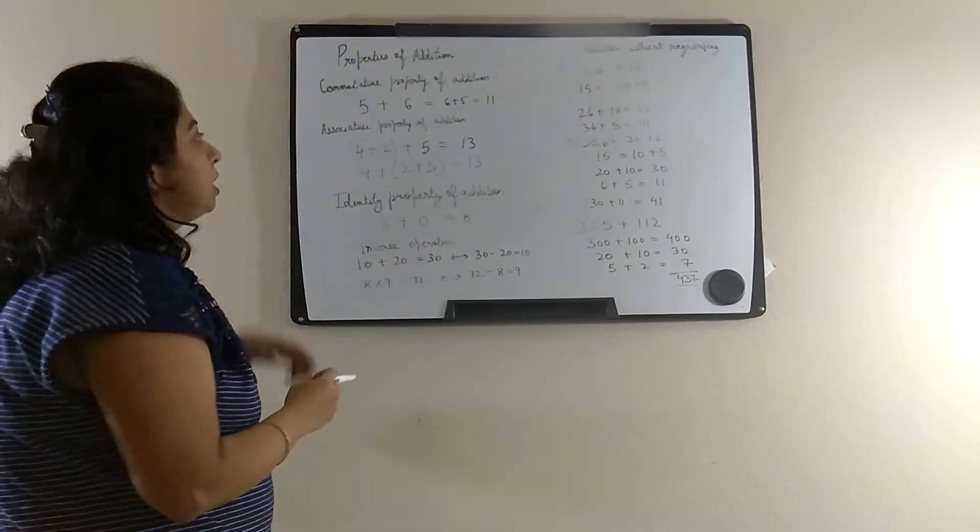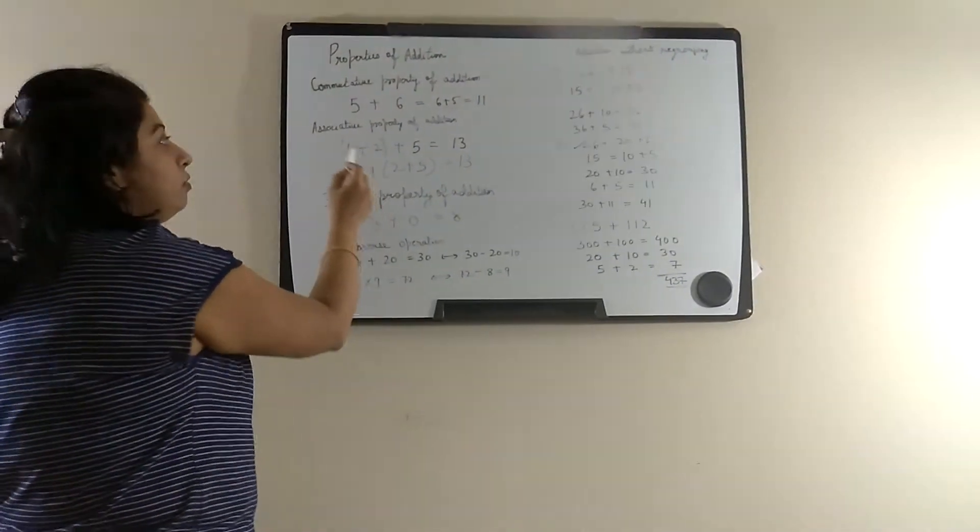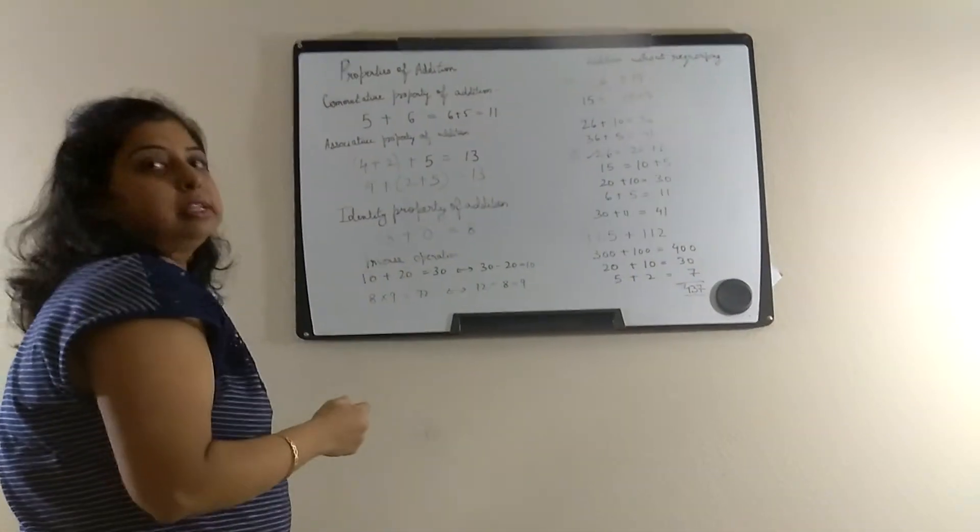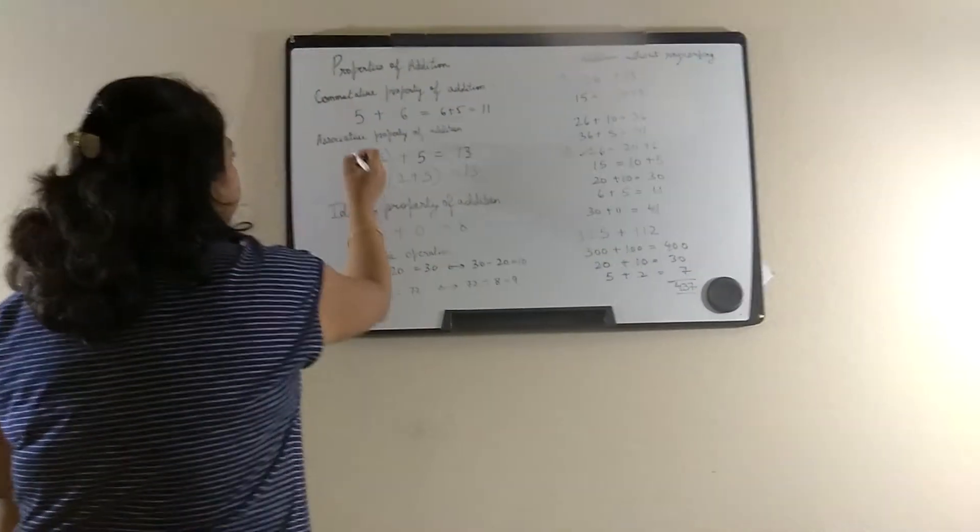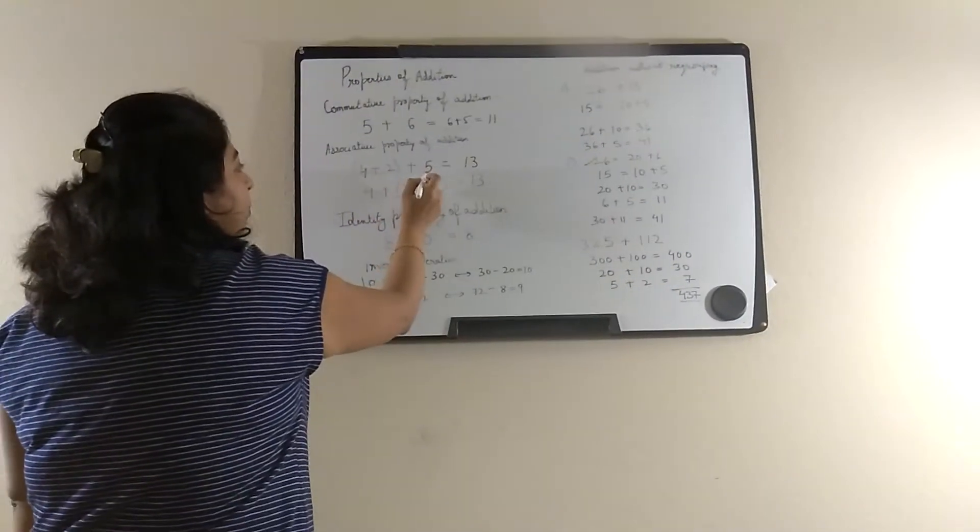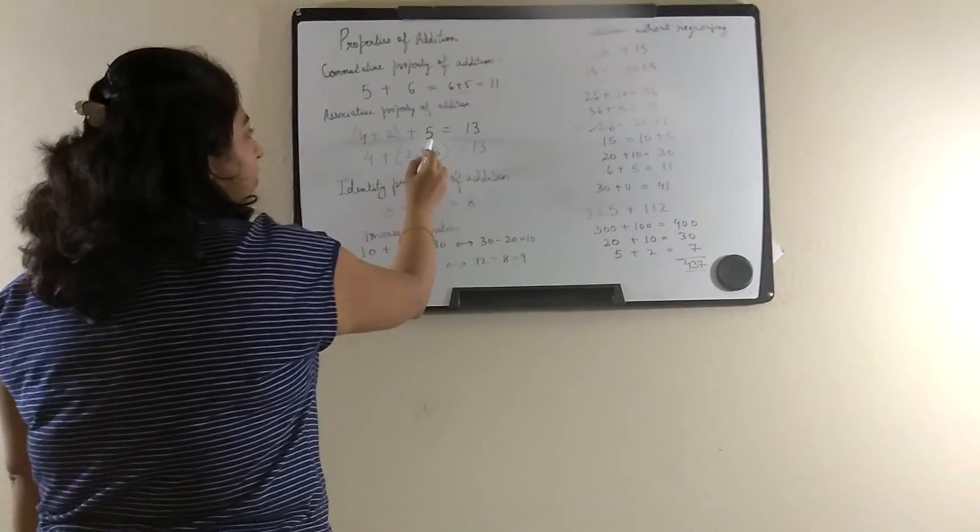Next is the associative property of addition. It says that if the addends are regrouped, then also the sum remains the same. Like if it is 4 plus 2 in the brackets plus 5, that means it is 6 plus 5 which is 11.